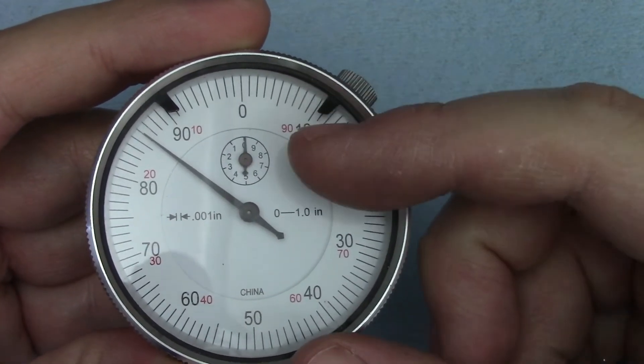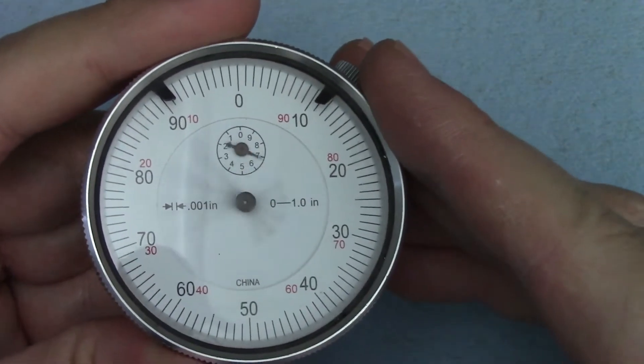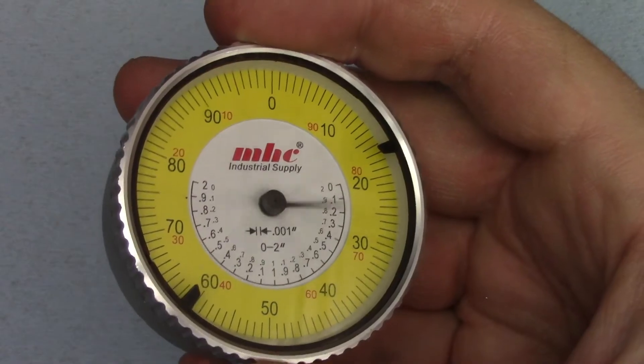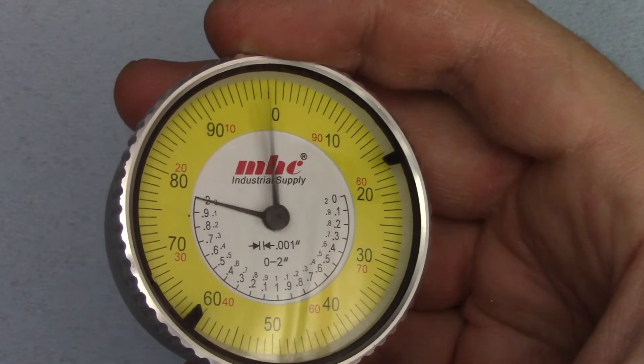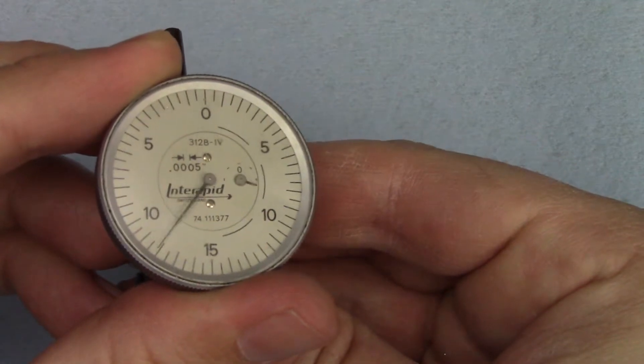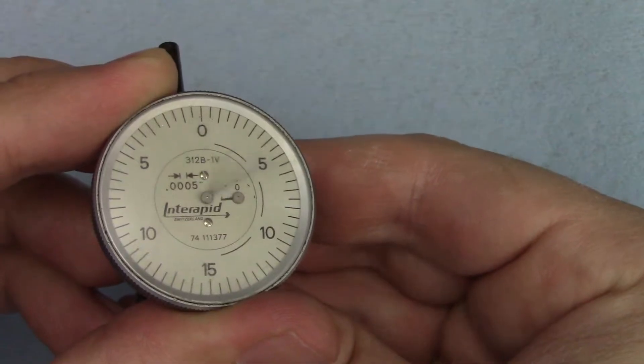You'll also often have a secondary hand that shows where you are within the travel of the indicator. It can be a circular dial like these, or it can possibly look fan shaped like on this two inch travel indicator and on my interrapid dial test indicator. However it looks, it helps keep track of how many rotations the dial has made.